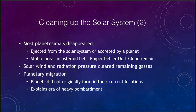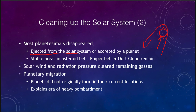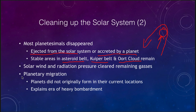Over time, the planetesimals disappeared. They were either ejected from the solar system through gravitational interactions — a planetesimal passing close to a planet could pick up energy and get kicked out entirely — or they were accreted by a planet. This process cleaned up the solar system, leaving only stable areas like the asteroid belt, Kuiper belt, and Oort cloud. The solar wind and radiation pressure of the Sun also cleared out remaining gases that were not massive enough to be accreted by the smaller planets.